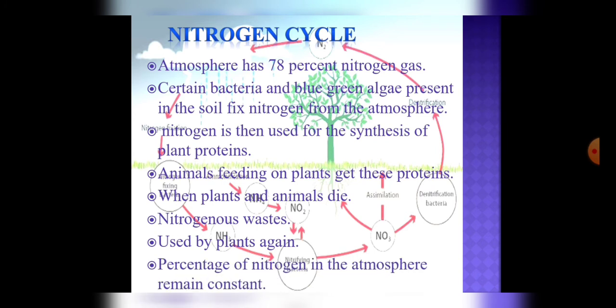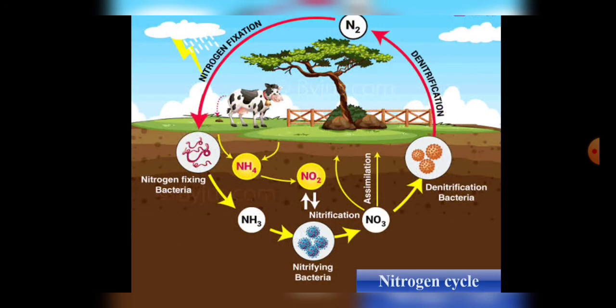Now let's revise this process through our systematic diagram. As we all know that atmospheric nitrogen gets fixed by the process of lightning with the help of bacteria and blue green algae, which is then converted into nitrogenous compounds.